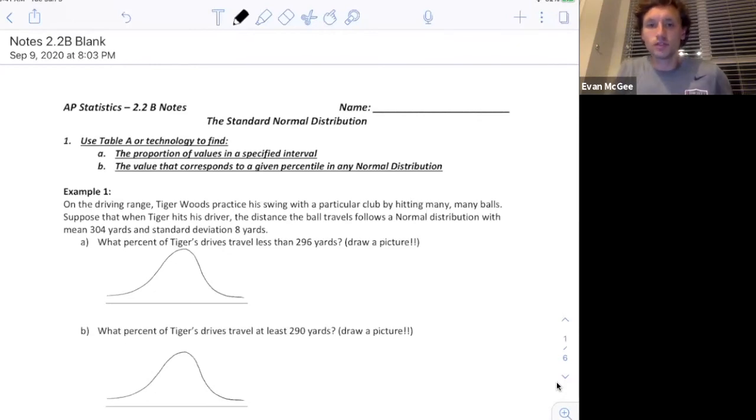This is the second 2.2 video. We're going to look at how to actually calculate the areas or proportions of values from a normal distribution using table A, or technology, which is just your calculator. Here's the first objective. It's got two parts.